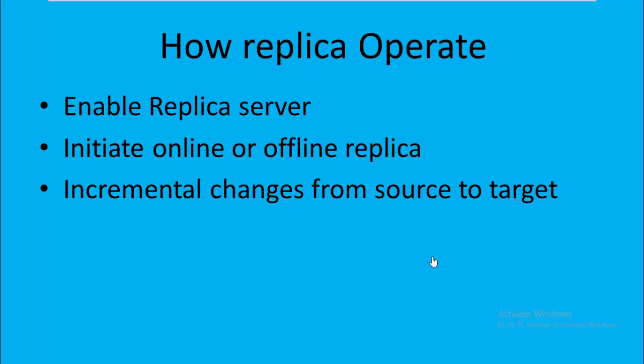How does a replica work? This is the most simple DR plan you can implement. To replicate a machine, the steps are very simple. You just need to enable a replica server configuration on your target machine. Then you can initiate replication from your source machine — either over the network or via offline media. Once the initial sync is done, it will continue with incremental changes from source to target.